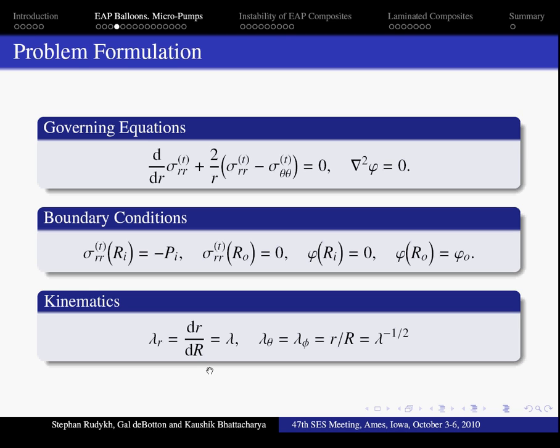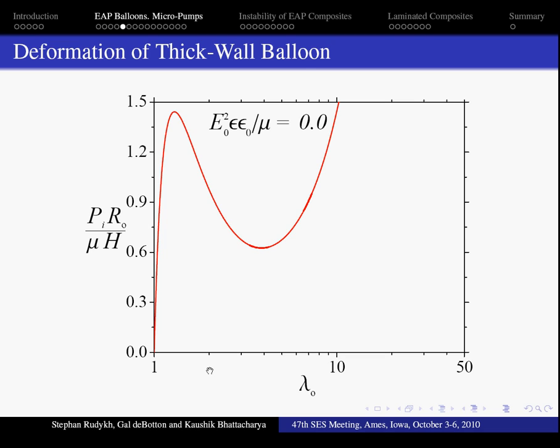We use the spherical symmetry and define the principal stretches. This is an example of the problem solution. The relationship between stretch and normalized pressure, here H is the initial thickness of the balloon.